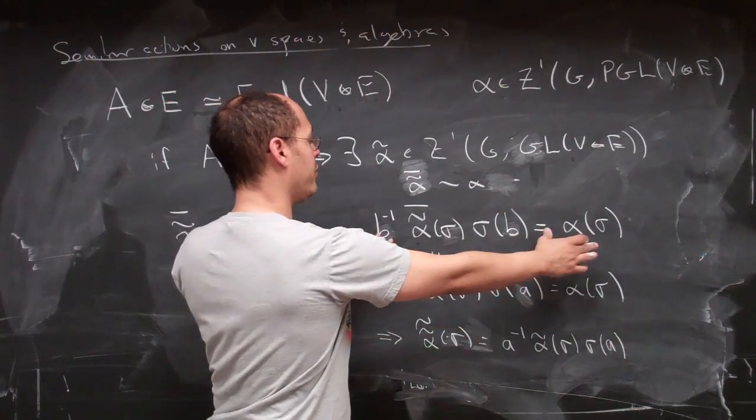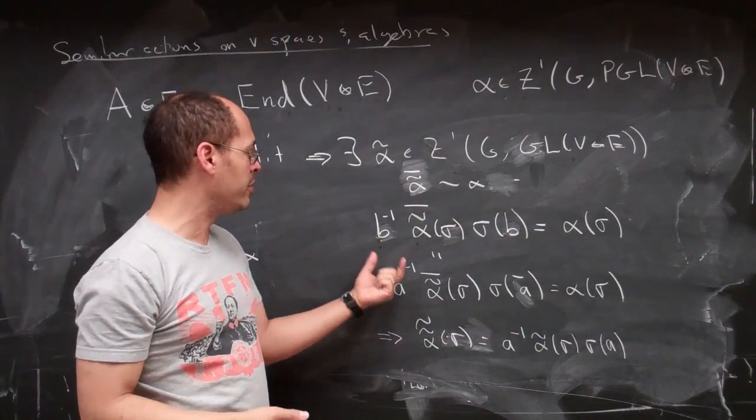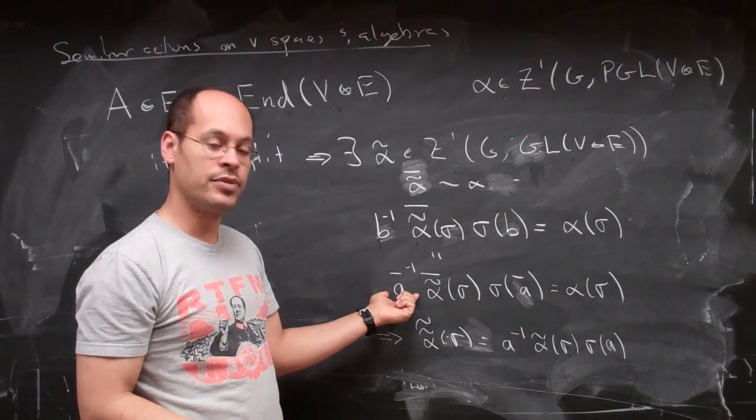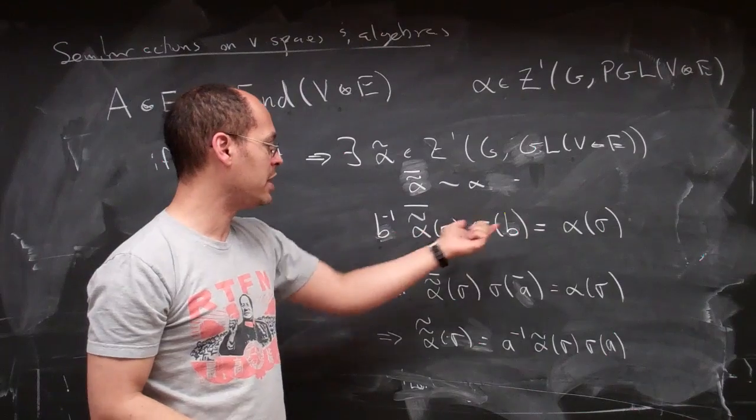Well, if I have this, then I just make the observation that every B in PGL is the bar of some A in GL. So I can kind of lift my Bs to GL.